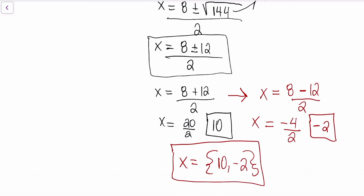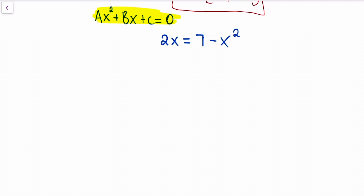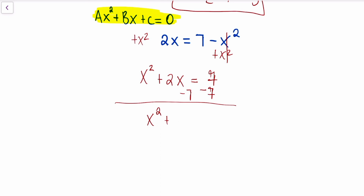This is a basic introduction to the quadratic formula. Let's take it one more step. In our second problem, we have to understand that the equation is not in the same format as the quadratic formula, so I'm going to have to rearrange it. I'm going to add x squared on both sides, giving x squared plus 2x equals 7, and then subtract 7 from both sides. Now my equation is in the same format as the quadratic equation, and we can start using the formula and plugging in our values.